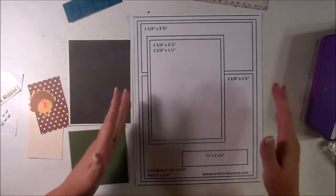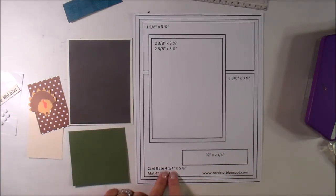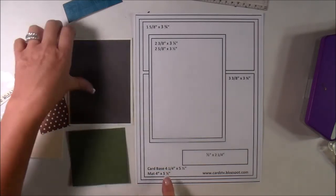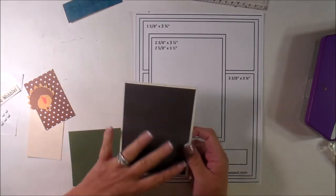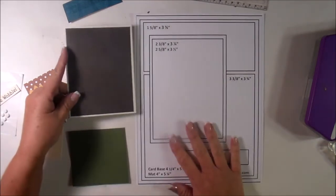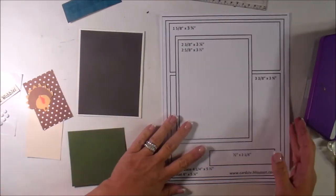So I'm starting out with an A2 size card, and right down here she says card base four and a quarter by five and a half, and then the mat is four by five and a quarter. So that's what I've done here. This is just recollections cardstock. Set this aside just a little bit over here.